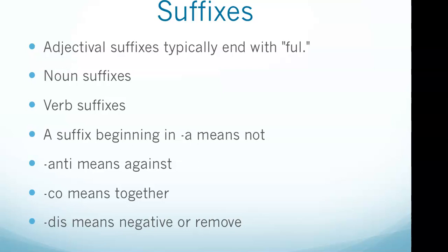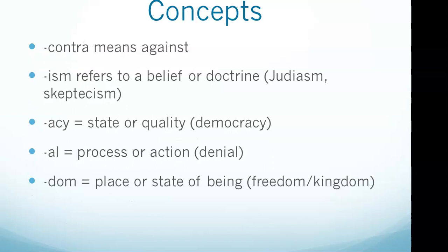What you want to take away from this is that suffixes will help you with words you might not know. So if you see a couple of words you don't know, rather than randomly guessing, consider these suffixes. A few more commonly tested concepts: 'contra' is a prefix meaning against. Anything ending in '-ism' refers to a belief or doctrine, such as Judaism or skepticism. Anything ending in '-acy' refers to a state or quality, like democracy. Anything ending in '-al' is an action or process, such as denial. And anything ending in '-dom' is a place or state of being, like freedom or kingdom.